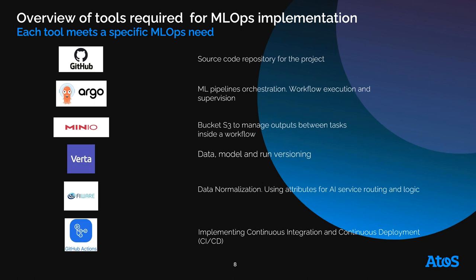Let's go through this list together. We have GitHub, which is the source code repository for the project. Argo Workflow for ML pipeline orchestration. MinIO, which is a bucket storage to manage output between tasks inside an ML workflow. Vertii for data, model, and run versioning — we use it for data normalization and all the AI service logic. Finally, we have GitHub Actions for CI/CD.